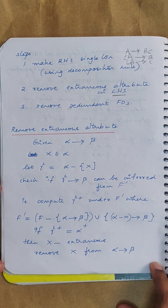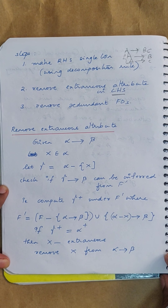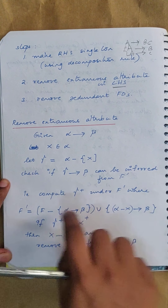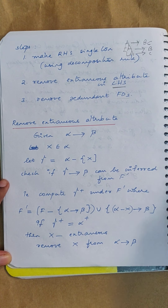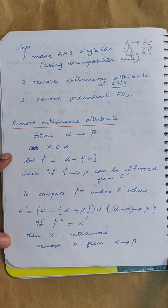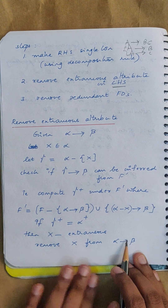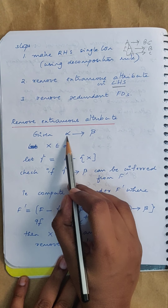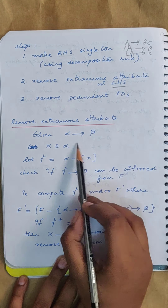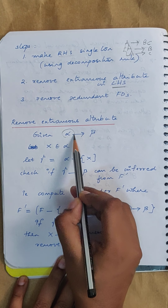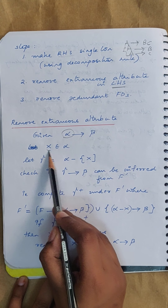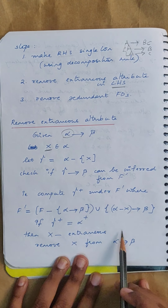Before moving on to how to find the minimal cover, you should know how to remove the extraneous attribute. For that, there is a small algorithm. Using this algorithm, you can understand how an extraneous attribute is removed. Given a functional dependency alpha→beta, you are trying to remove an extraneous attribute in the LHS. Alpha contains more than one attribute. Let X be an element in alpha. If you want to find out if X is extraneous, these are the steps.